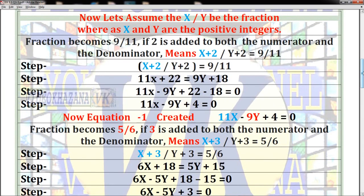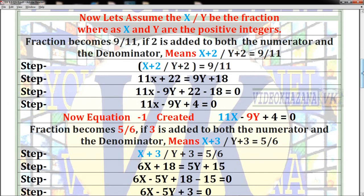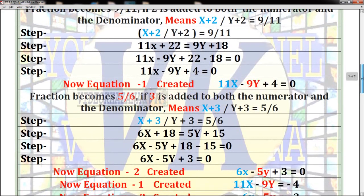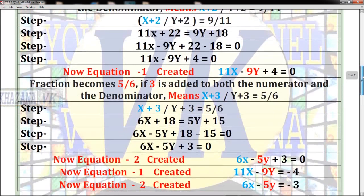According to the second condition, the fraction becomes 5/6 if 3 is added to both numerator and denominator. That means (x+3) in the upper value and (y+3) in the lower value equals 5/6. Here is the solution step by step.